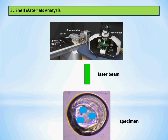Scientists at the Horn Point Laboratory and Woods Hole Oceanographic Institution on Cape Cod, Massachusetts, are using a special technique called Raman spectroscopy to study the shells of larval bivalves like oysters. This involves a special kind of microscope that uses a laser to determine the material composition of a specimen based on the vibrational energies of the molecules that compose it.